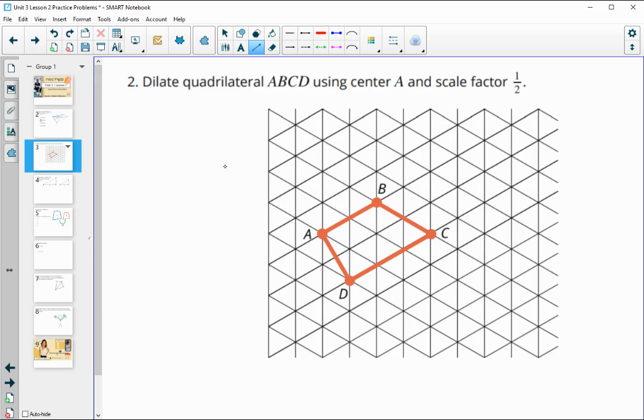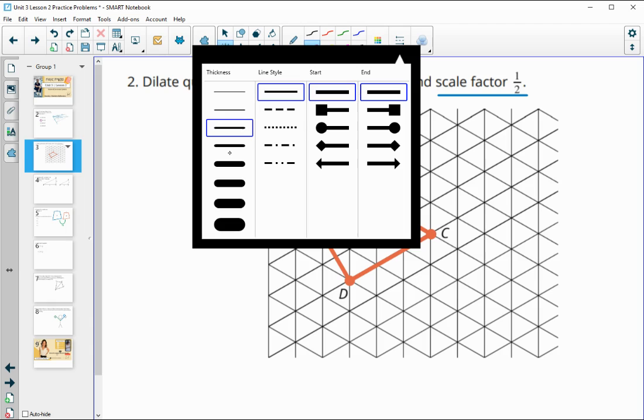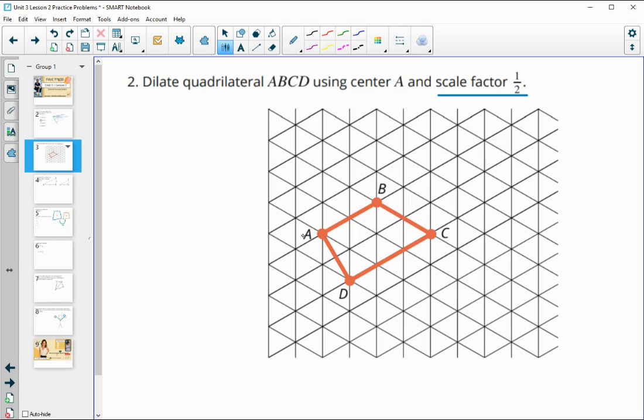Number two wants us to dilate quadrilateral ABCD, this orange one here, using a scale factor of one half. So our shape is going to be getting smaller, and we're going to be using A as the center. Let me get A highlighted. Here's A, and we're going to be looking at how far it is from A to each point along a line and cutting that in half.